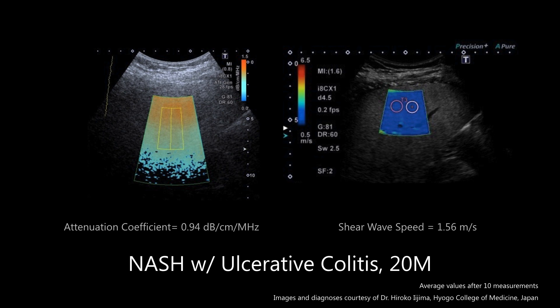This patient is at risk for further disease progression due to the effects of inflammation and fibrosis. As this example shows, attenuation imaging and shear wave elastography can provide complementary quantitative information to help increase diagnostic confidence.